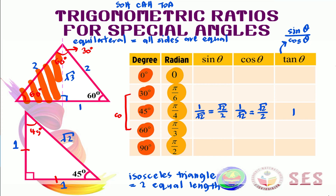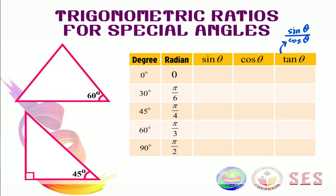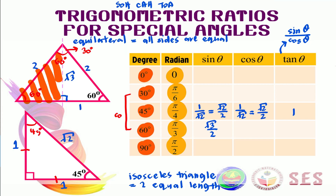Now that we've finished preparing the triangle, let's find the value for sine 60. Sine is opposite over hypotenuse, so sine 60 equals square root of 3 over 2. Recalling complementary angles, the complement of 60 is 30. By the complementary angle rule, sine 60 equals cosine 30, so cosine 30 also has the value square root of 3 over 2.